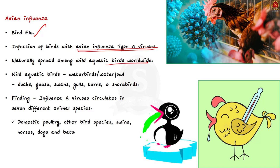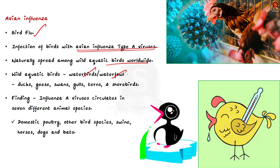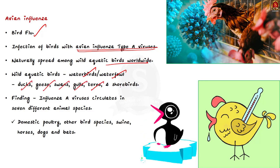Wild aquatic birds include water birds and waterfowl such as ducks, geese, swans, gulls, terns, and shorebirds.